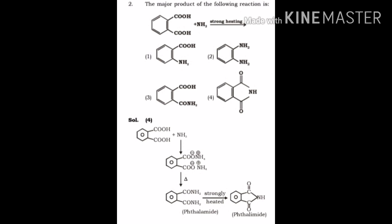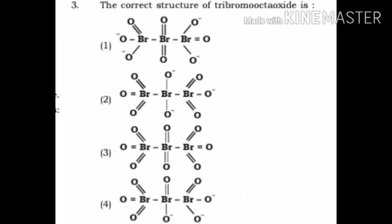Phthalic acid treated with ammonia forms ammonium salt of phthalic acid, and on heating it forms phthalamide. Phthalamide is further strongly heated and leads to liberation of ammonia gas and phthalimide is formed.